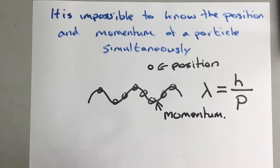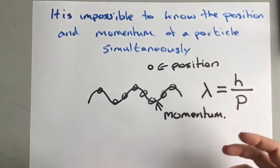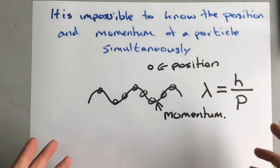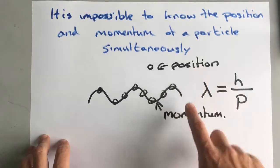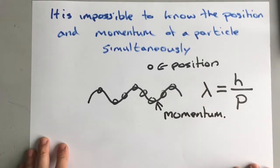So what Heisenberg's Uncertainty Principle is basically saying is that it is impossible to make something be a particle and a wave at the same time.